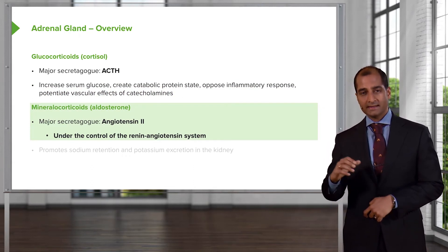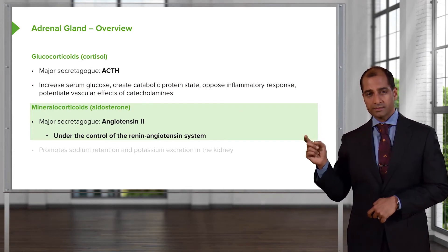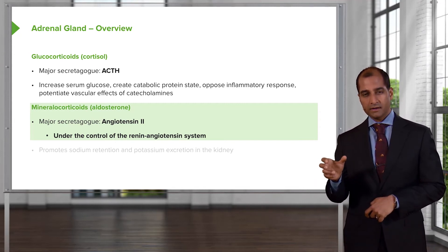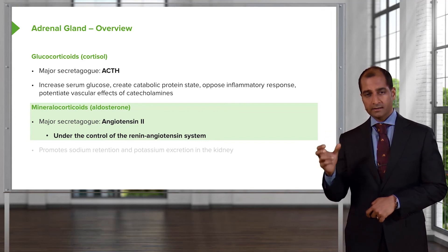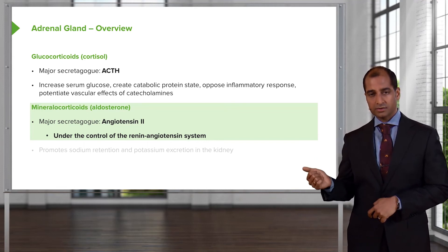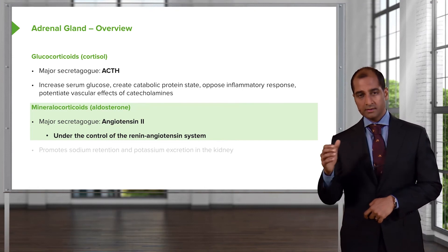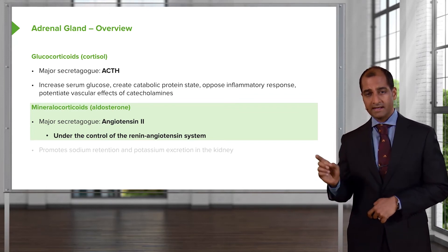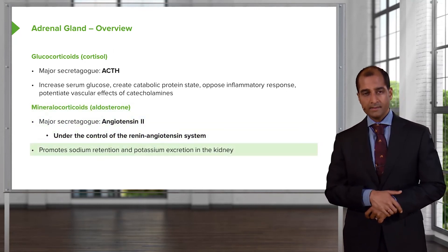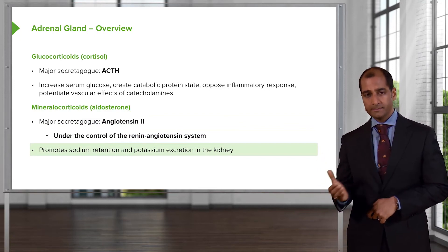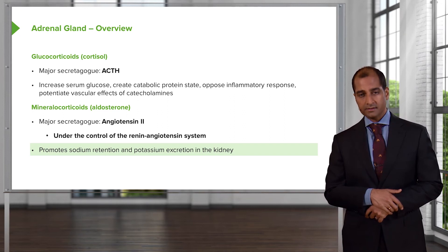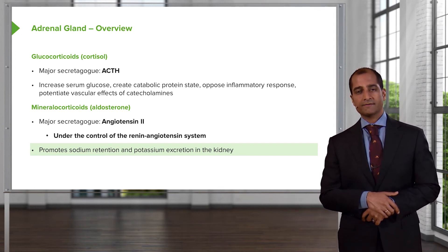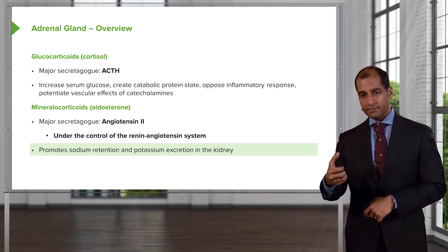Mineralocorticoid activity — what's going on in the fasciculata? The fasciculata produces cortisol, while the glomerulosa produces aldosterone. Aldosterone is regulated by angiotensin 2, which is converted from angiotensin 1 to angiotensin 2 by the ACE enzyme in the lung — this is the number one feedback. Mineralocorticoids reabsorb sodium and water from the collecting duct principal cells, acting through the sodium-potassium pump and ENaC (epithelial sodium channel).